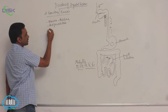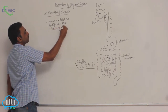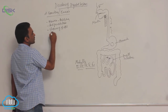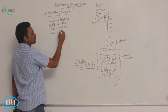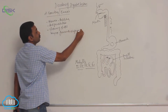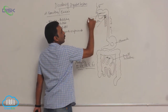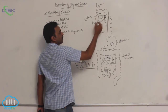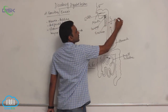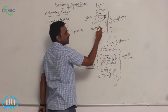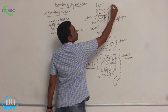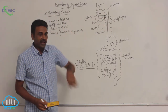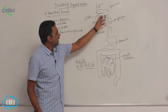During vomiting, there is closure of the glottis. The larynx moves forwards and upwards. This is the larynx, that is the glottis, and this is the trachea. The glottis — the slit-like aperture of the trachea — is closed, and the larynx is dragged forwards and upwards.